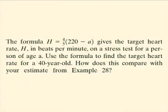The formula H equals four-fifths times the quantity 220 minus A gives the target heart rate H in beats per minute on a stress test for a person of age A. Use the formula to find the target heart rate for a 40-year-old. How does this compare with your estimate from example 28?